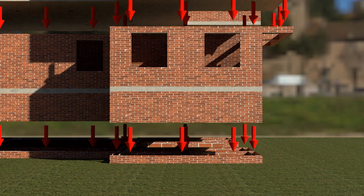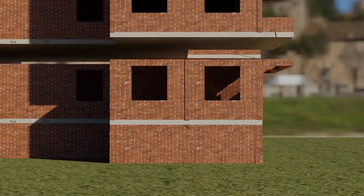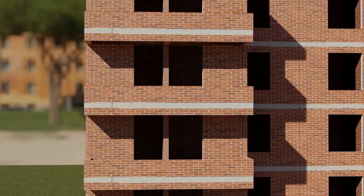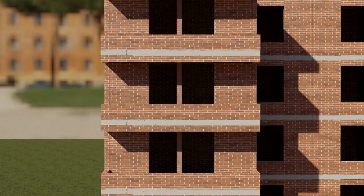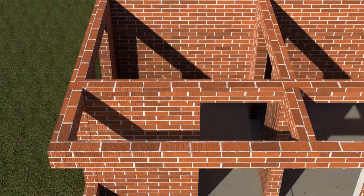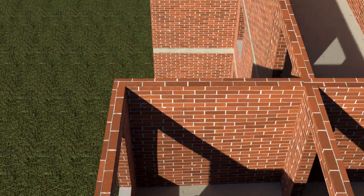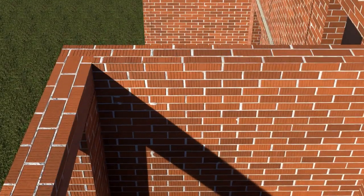As walls are the active structural members in load bearing structures, they must be able to withstand all the forces from the floors above. As we go down to the lower levels, the walls need to be stronger, and so thicker walls are provided on the lower floors.